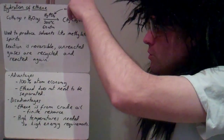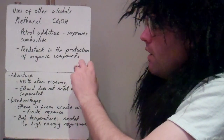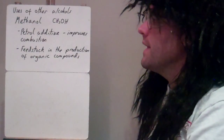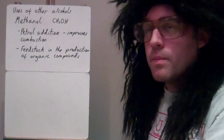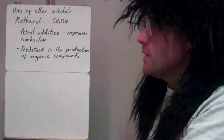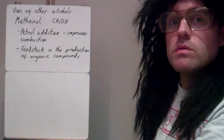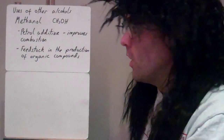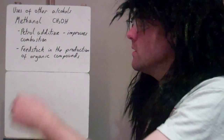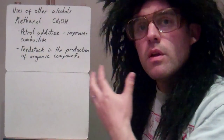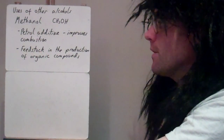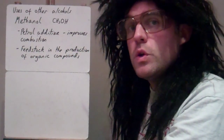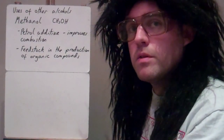We looked at the uses of ethanol — in alcoholic drinks from fermentation, and as solvents like methylated spirits from the hydration of ethene. Another important alcohol is methanol. CH3OH is a petrol additive because it improves combustion. Methanol contains a lot of oxygen relative to the amount of carbon, so it helps complete combustion occur by bringing oxygen to the reaction, meaning less oxygen needs to come in from the air to the engine. It's also a good feedstock in the production of organic compounds — it's a small molecule used to make larger organic compounds in many different uses.